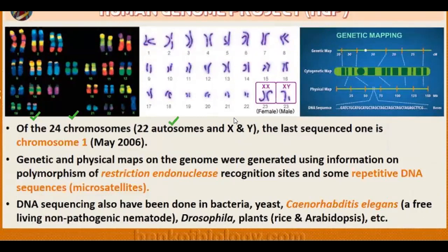There are 24 distinct chromosomes — we have a total of 46 chromosomes, 22 pairs are autosomes and 24 chromosomes are different because X and Y chromosomes are not similar to each other while the 22 autosome pairs are similar. Chromosome 1 was the last to be sequenced, completed in the month of May in the year 2006. Genetic and physical maps on the genome were generated using information on the polymorphism of restriction endonucleases, recognition sites, and repetitive DNA sequences.